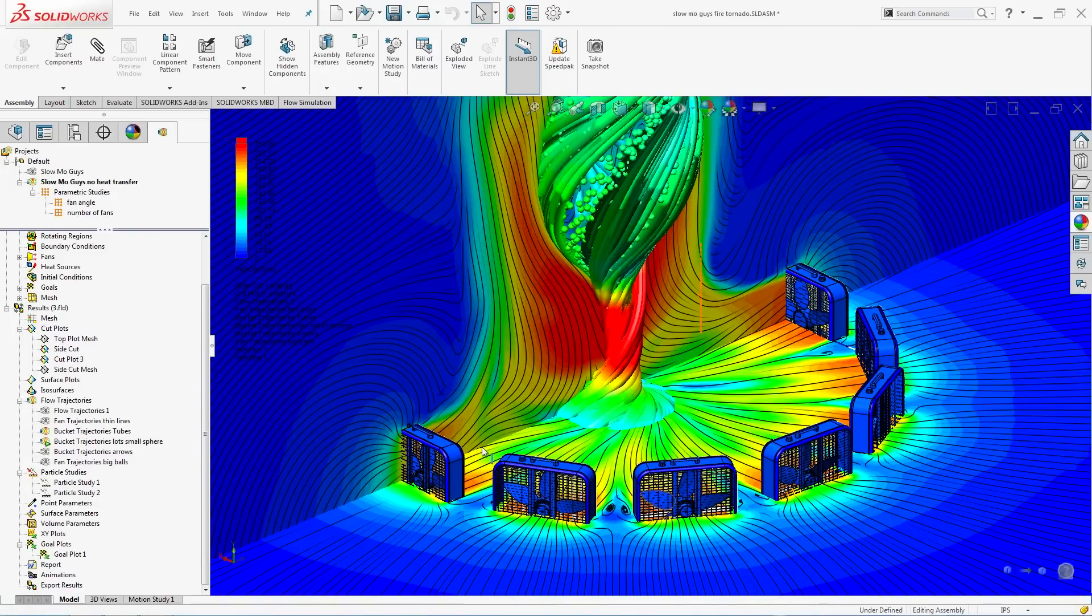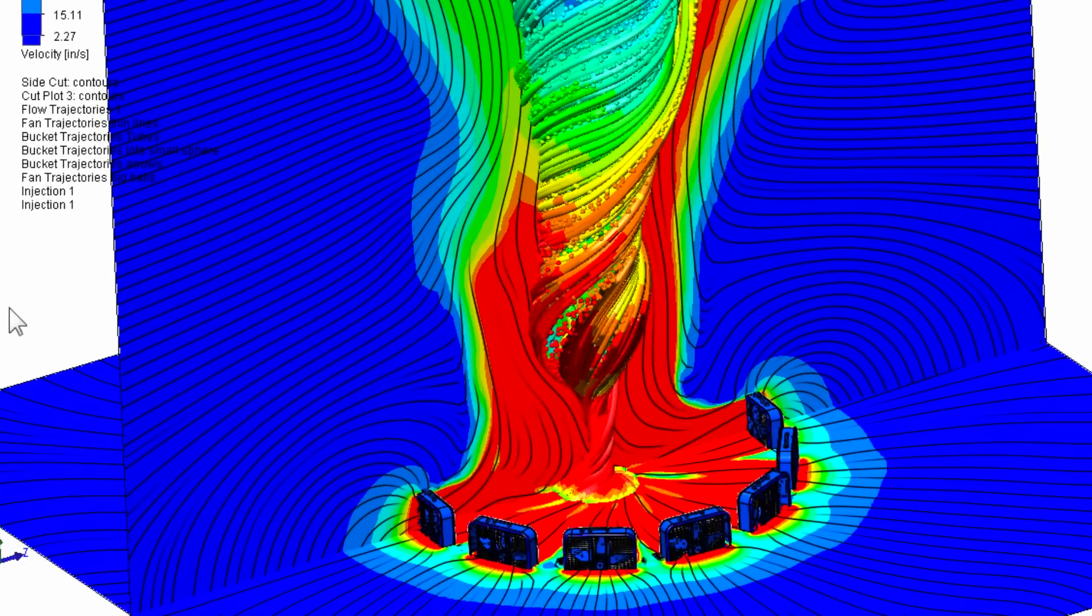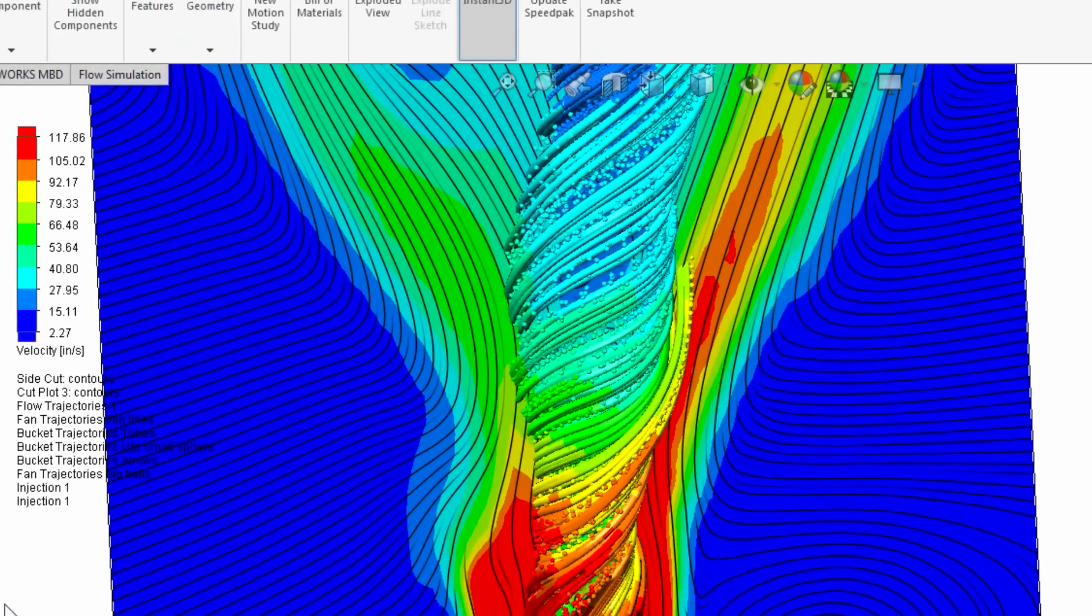What you're visualizing here are the velocity contours, that's the colors, but you're also seeing the flow patterns to understand what the shape of the flow is going to look like.